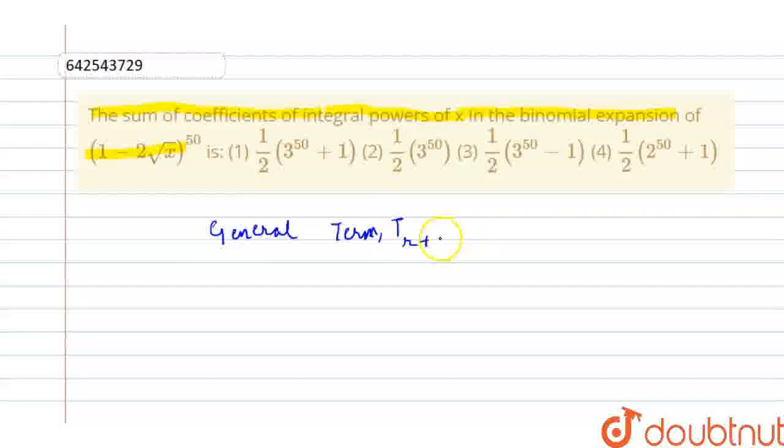so that would be equal to 50Cr(-1)^r(2√x)^r.